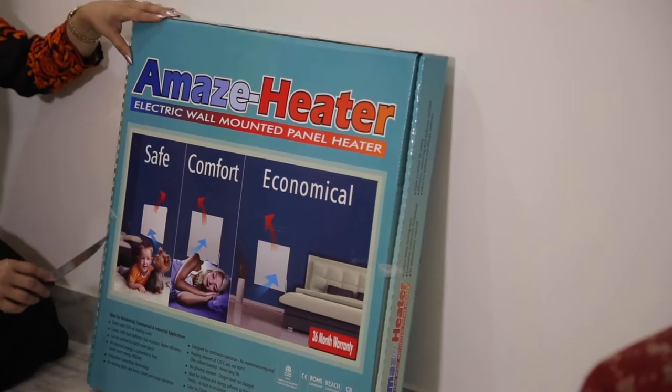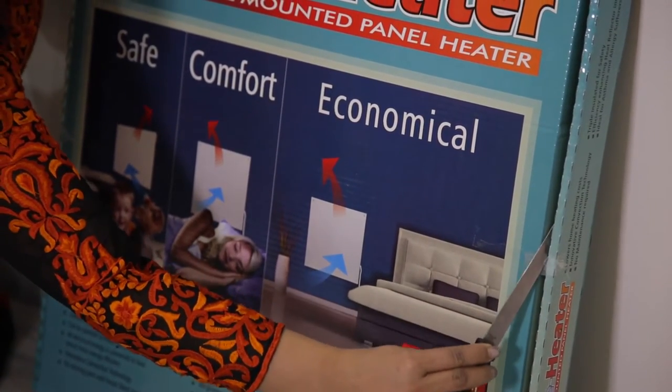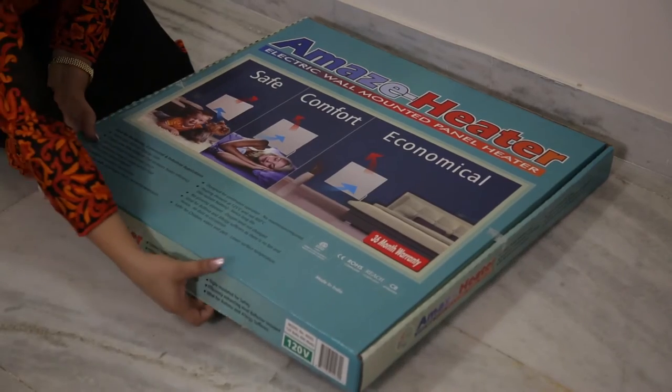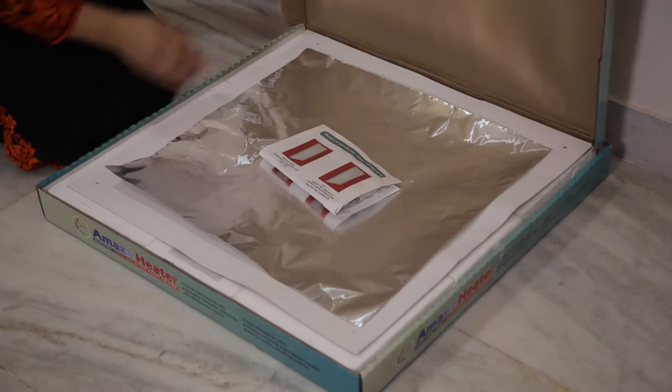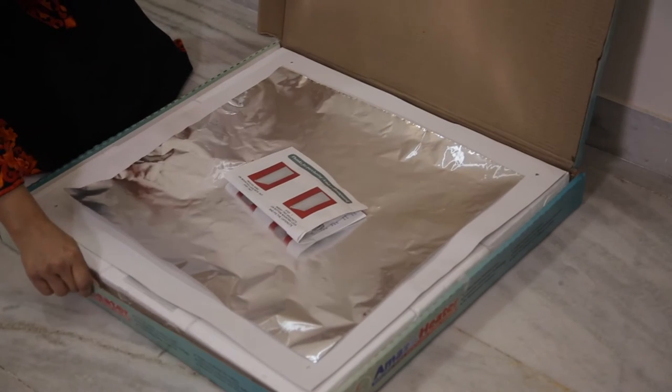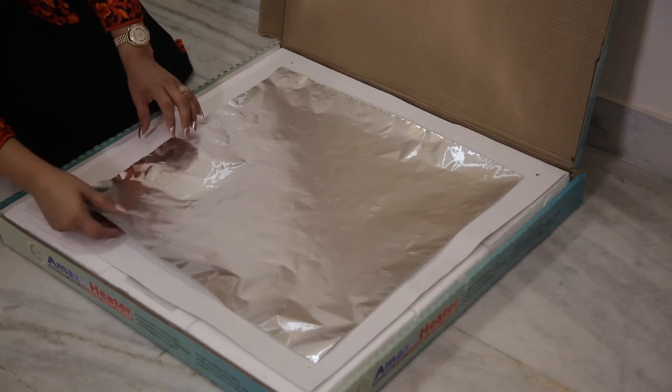Cut the adhesive tape as shown to open the box. Carefully remove all the contents from the box. Remove the panel heater from the styrofoam packing material.